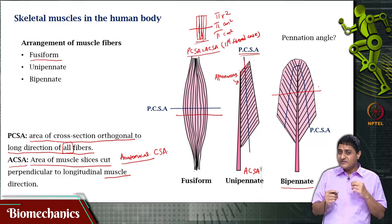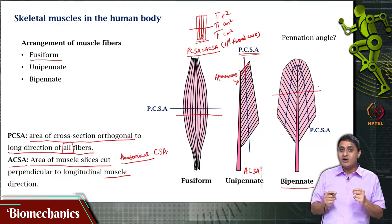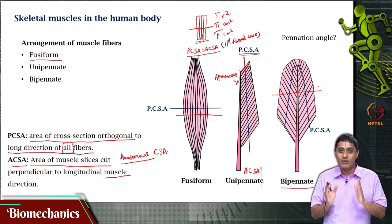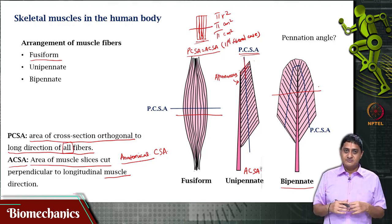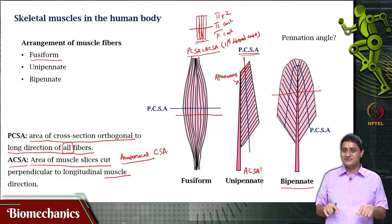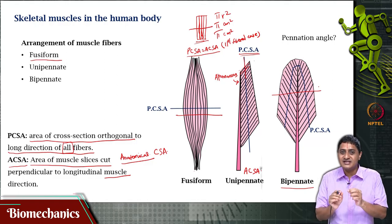Now we get a sense of why pennation exists. We are interested in packing a large number of fibers in a given volume. If all our muscles were required to be parallel, we would be huge. Because we do not have the luxury of space, and because there is a need to pack a large number of fibers in a given volume, we have pennation.